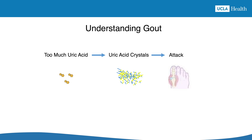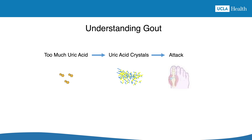The whole chain of events is what we call gout. The first part — where there's too much uric acid accumulating to the point that uric acid crystals start forming — happens quietly. You don't feel this at all, and it can take many years for the crystals to form. But as long as the uric acid level stays high, more crystals will keep forming and the crystals are not getting broken down. Let's call this part of the chain gout the disease.